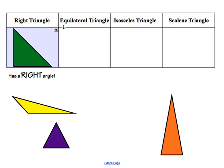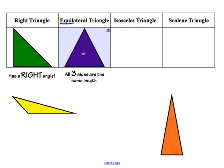Moving on to the equilateral triangle. The key is in the word 'equal' — equal means equal. So an equilateral triangle is a triangle that has all three sides the same length. Looking at the remaining three triangles, the one that fits this description would be our purple triangle, with all three sides the same.